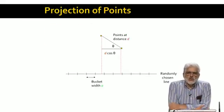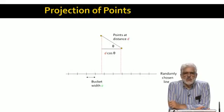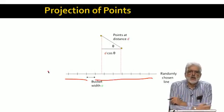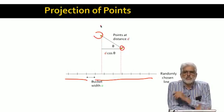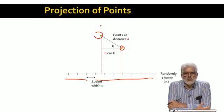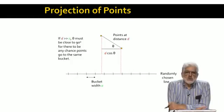So, here's a picture of what is going on. We're going to look at only the two-dimensional space for simplicity, but similar ideas will work in any number of dimensions. We see a randomly chosen line divided into buckets of width a. And here are two points at distance d. When we project them onto the chosen line, the distance between them is d cosine theta, where theta is the angle the chosen line makes with the line between the two points.